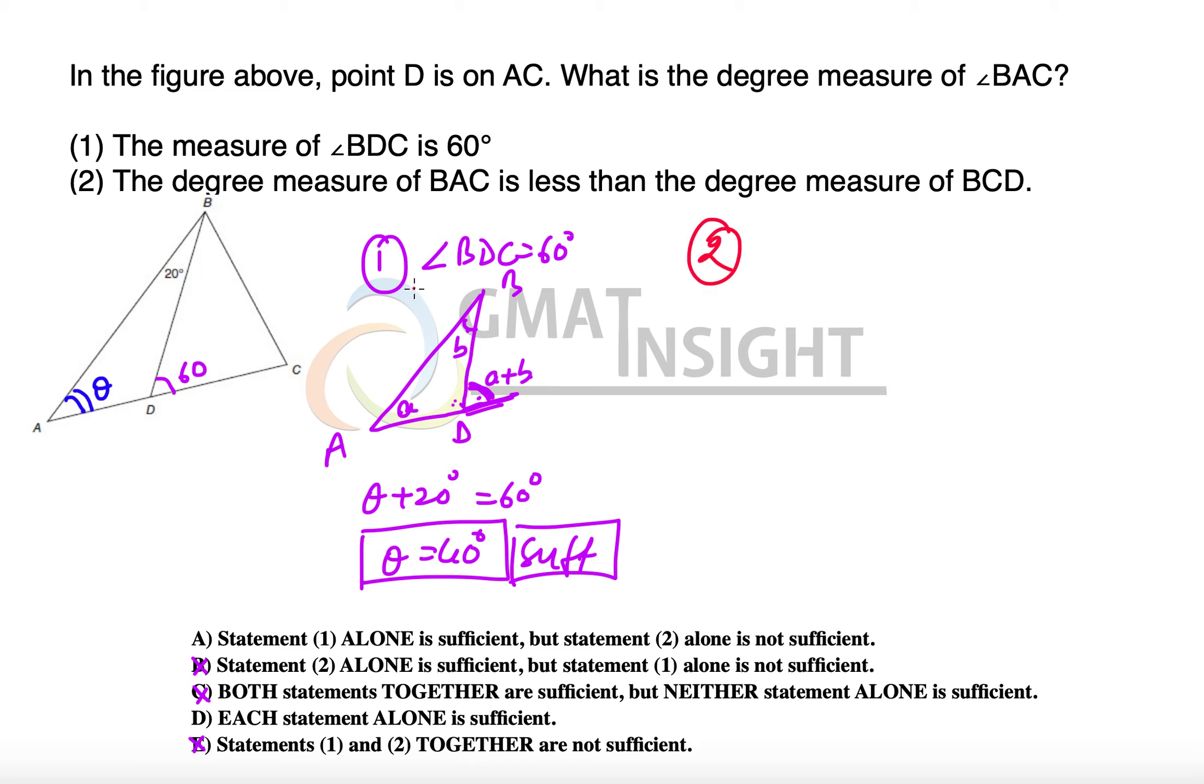The second statement here says that the degree measure of angle BAC is less than the degree measure of angle BCD. That means this angle is greater than theta. But since we do not have any way to find out the unique value of theta, therefore the second statement alone will not be sufficient to answer the question.